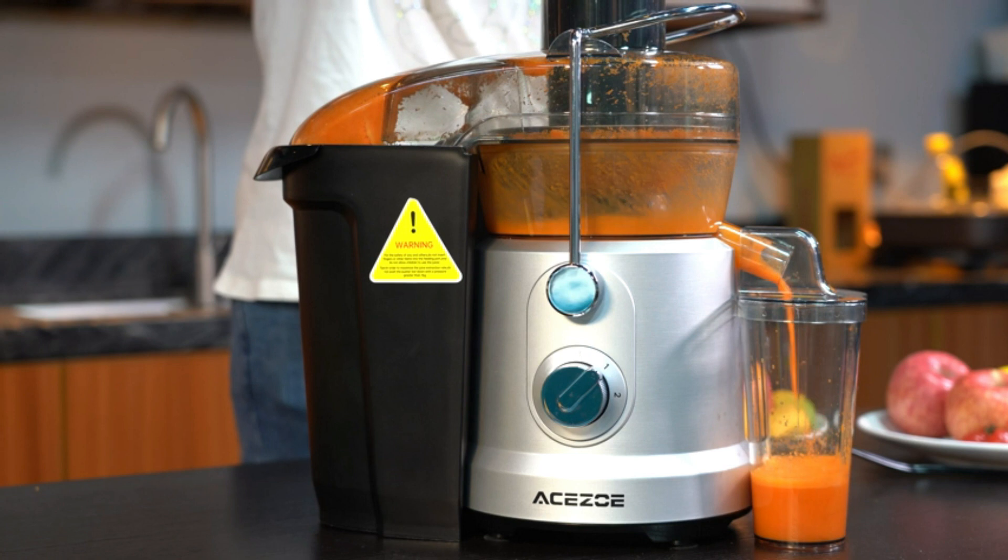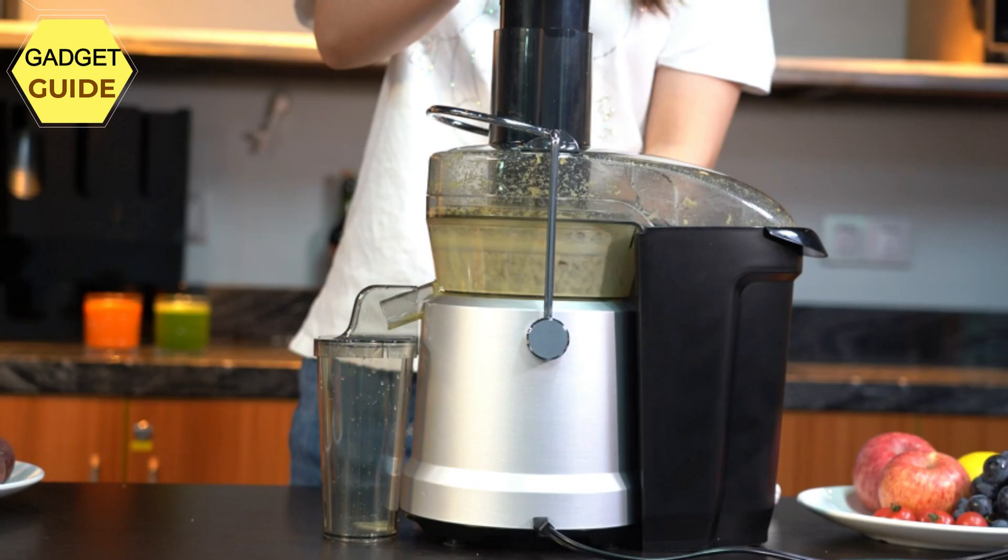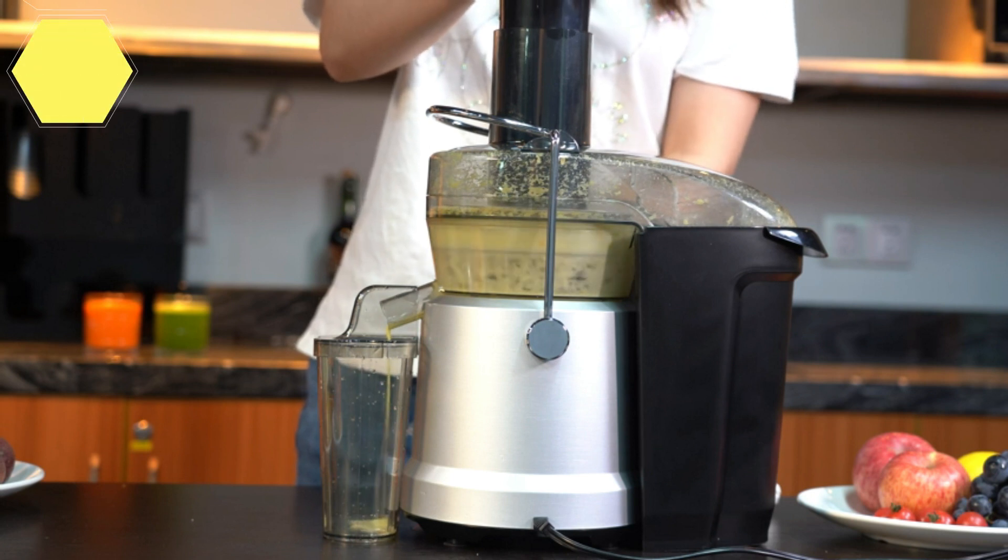Pure juicer with less pomace - Ace Zoe Juicer with cold extraction system and Germany-made precision mesh filter allows you to enjoy purer taste juice. Grinding is more delicate, meaning less pomace. Compared with other high-watt juicers, cold extraction means less damage to the vitamins and other nutrients during processing.